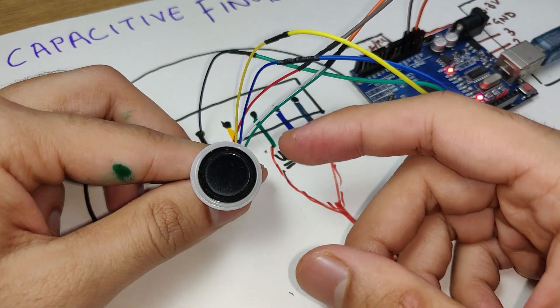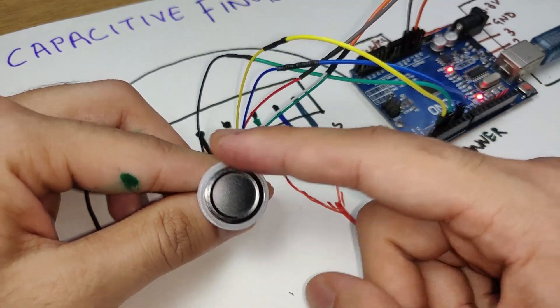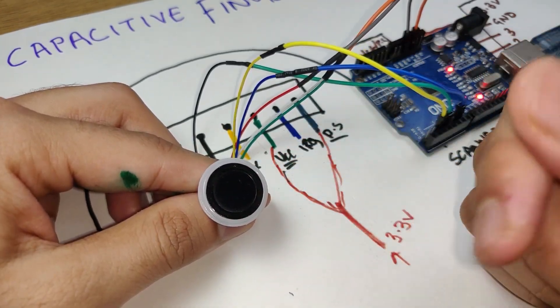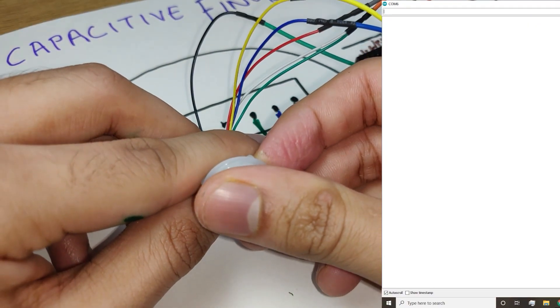Once the code gets uploaded, you can head over to the serial monitor. The code that we just uploaded on the Arduino has three functions: read and test the fingerprint that we press, adding a new fingerprint, and deleting a fingerprint.